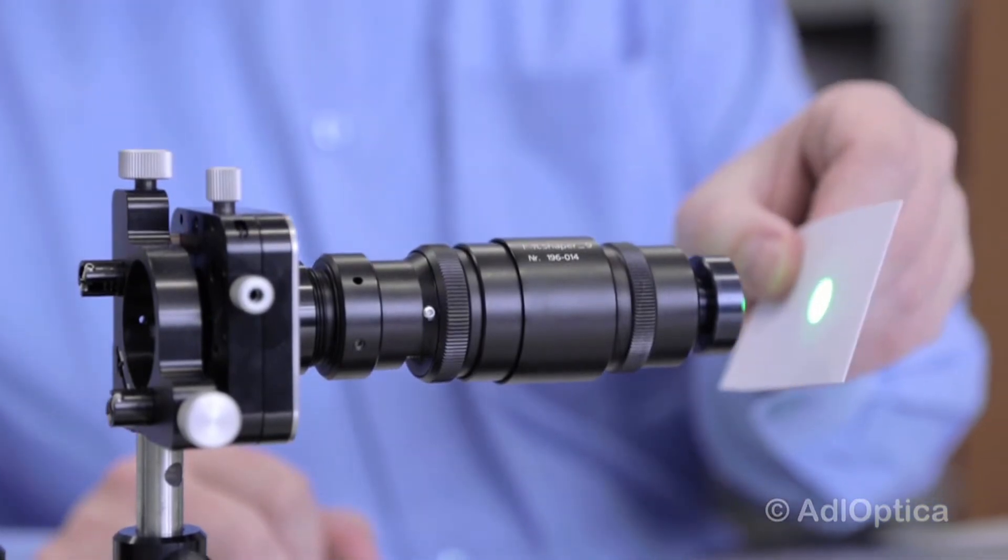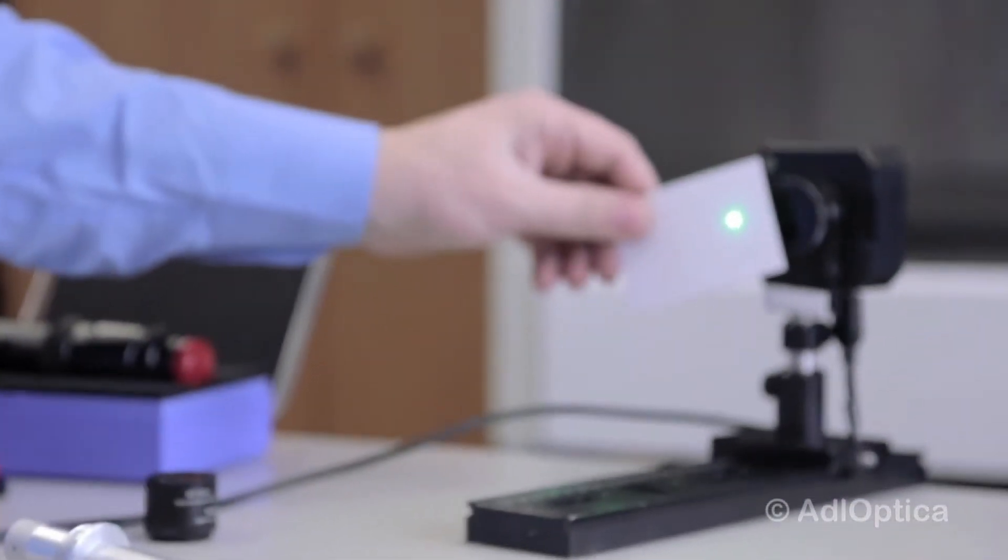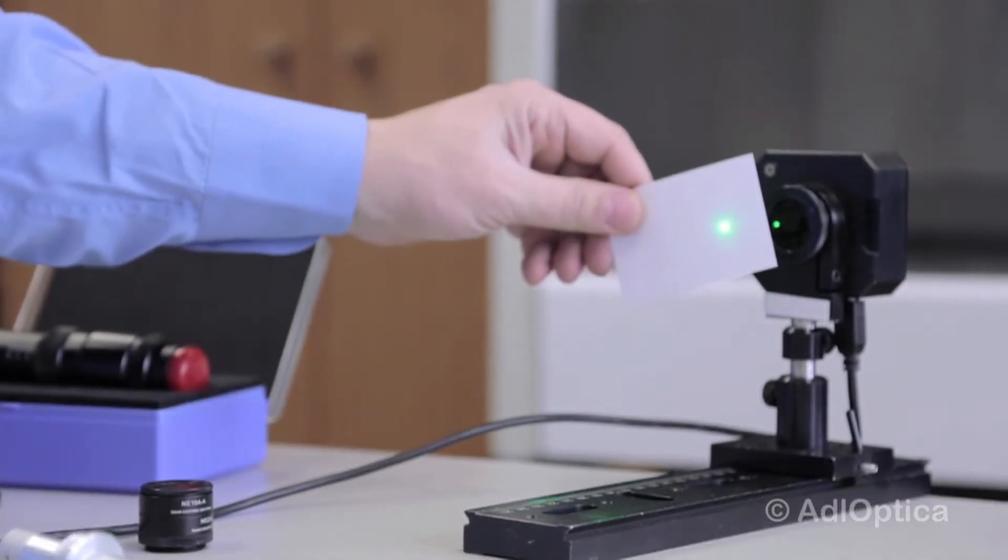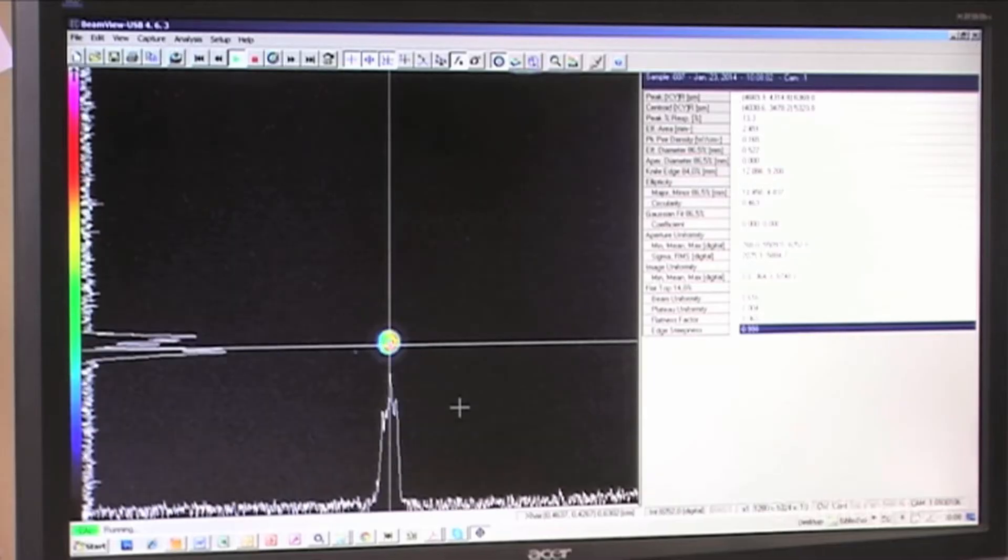And now you see the beam is focused. And we will put the camera at a distance about one meter where the focal plane is located. And we can see now on the screen the spot.